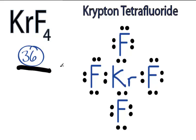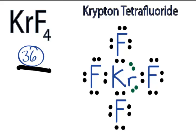But we have a total of 36 valence electrons that we need to place in the KrF4 Lewis structure. So what we'll do is place the remaining four — those two pairs of valence electrons — on the central krypton right there. That'll give us more than 8 valence electrons around the krypton, but that's okay. Krypton is below period 2, row 2, on the periodic table and it can have more than 8 valence electrons. In this case, it will have 12 valence electrons.